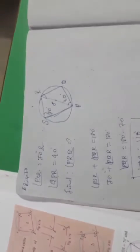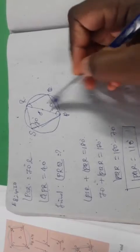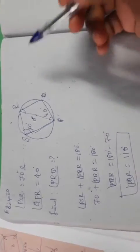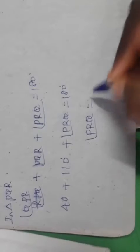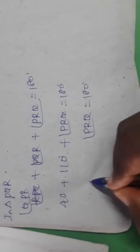Now, taking triangle PQR, I want to find the angles. Applying the angle sum property — the sum of angles of a triangle is 180 — we have angle QPR plus angle PQR plus angle PRQ equals 180. Substituting: 40 plus 110 plus angle PRQ equals 180. So 150 plus angle PRQ equals 180, giving angle PRQ equals 180 minus 150, which is 30 degrees.